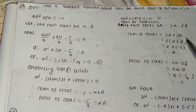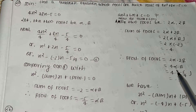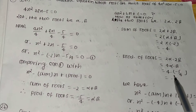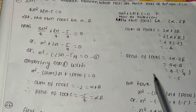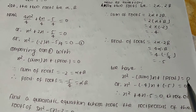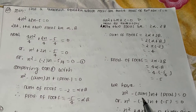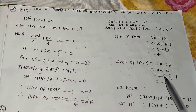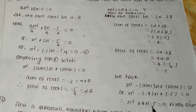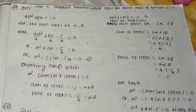The product of the new roots is 2alpha × 2beta = 4 × alpha × beta. We found alpha × beta = -5/4, so the product is 4 × (-5/4) = -5. Using x² - (sum)x + (product) = 0, we get x² - (-4)x + (-5) = 0, therefore x² + 4x - 5 = 0 is the required equation. Bye-bye, see you in the next video, thank you.